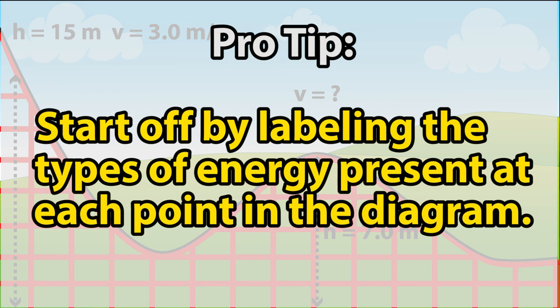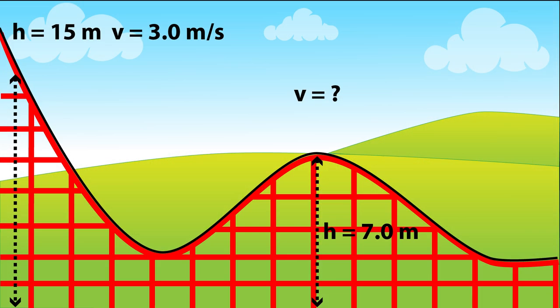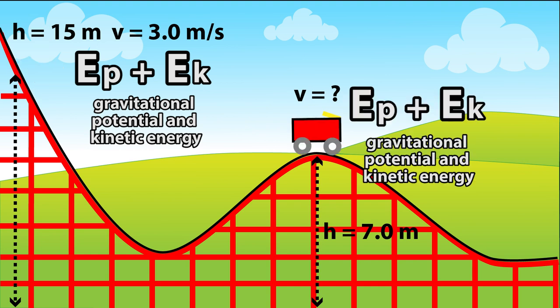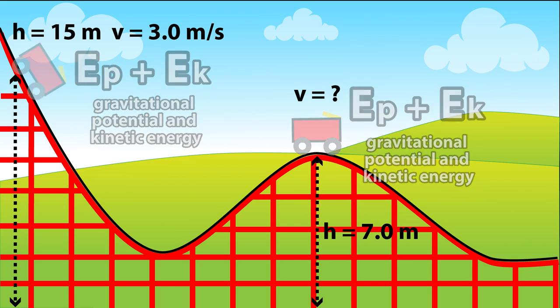We're going to start these types of problems off by labeling on our diagram the type of energy present at each point. So at the top of the first hill there is both gravitational potential and kinetic energy, gravitational potential because it's some height in the air and kinetic because it's moving. And at the top of the second hill there's also gravitational potential and kinetic energy because it's moving and it has some height up in the air.